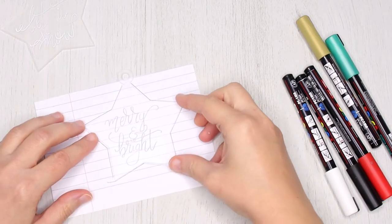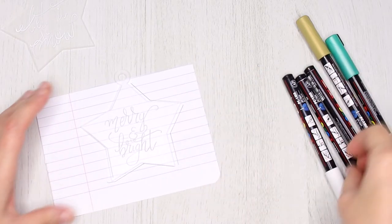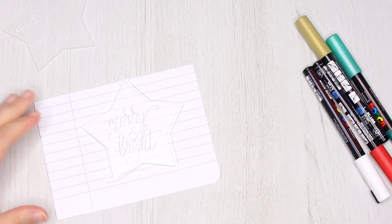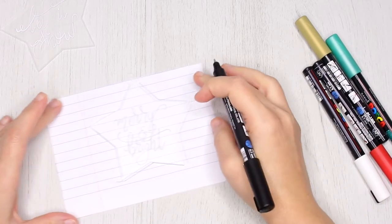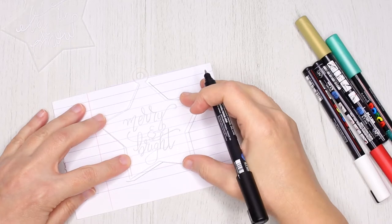For the second one I chose the text "Merry and Bright" and this time I'm using black for the text. Gold isn't better than white either, so I thought, well, let's keep it simple.